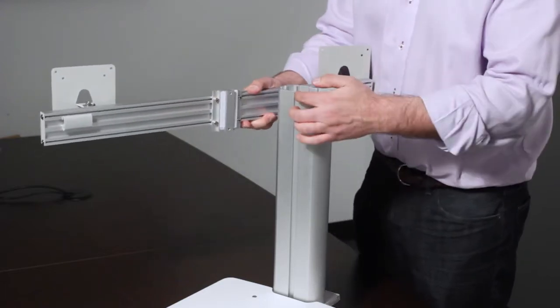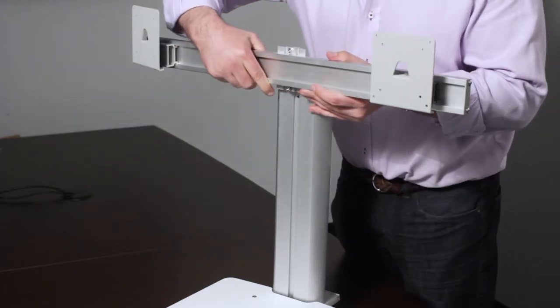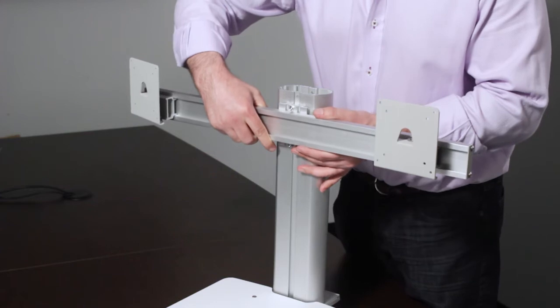Step 9. Slide the crossbar mount into the channel to the appropriate height and then tighten top and bottom screws to lock into the desired position.